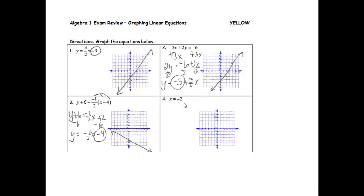And then x equals negative 2. Again, if the x-axis is horizontal, then an x equals is going to be vertical at negative 2. And that's all we need to do for that one.